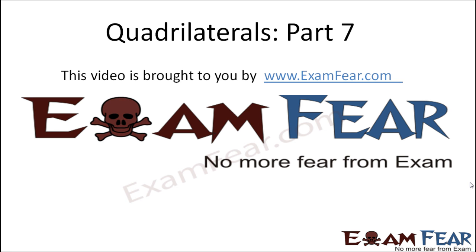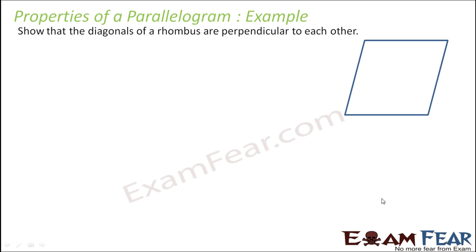Hello friends, this video on quadrilaterals part 7 is brought to you by examfear.com — no more fear from exam. We have to show that the diagonals of a rhombus are perpendicular to each other. Before proceeding, we should know what a rhombus is. Rhombus is a parallelogram where all four sides are equal.